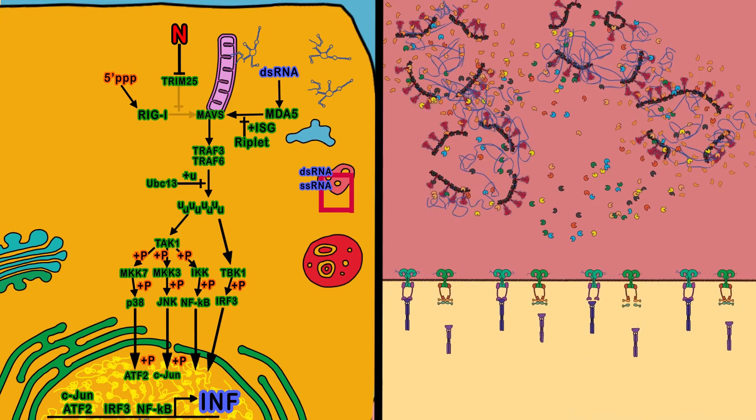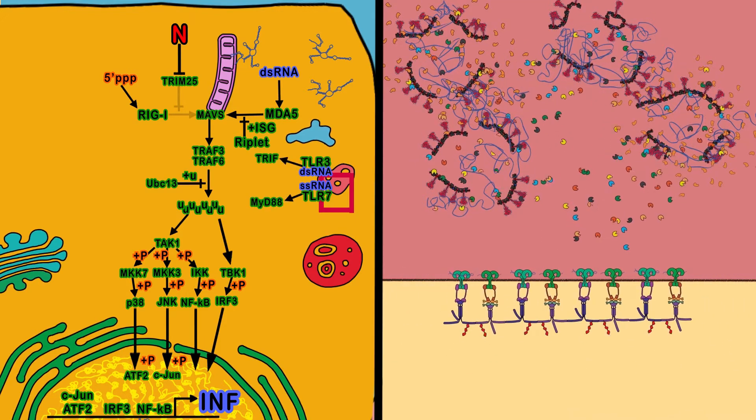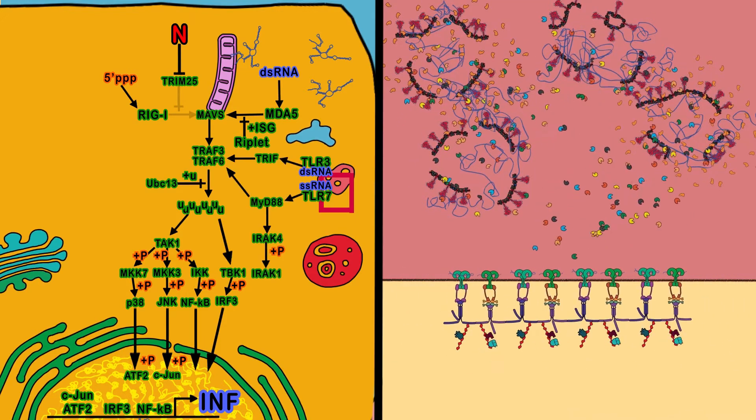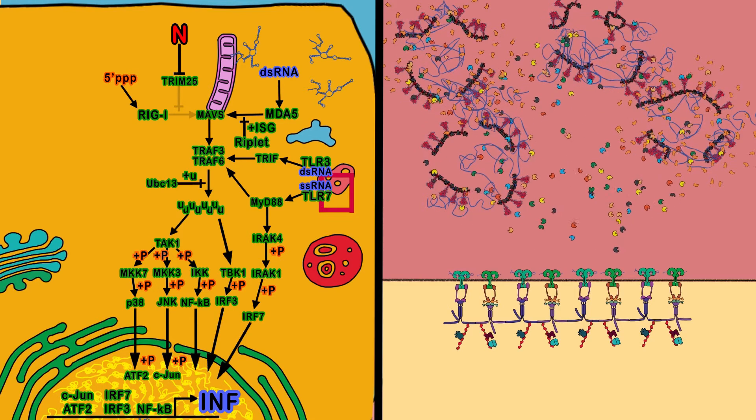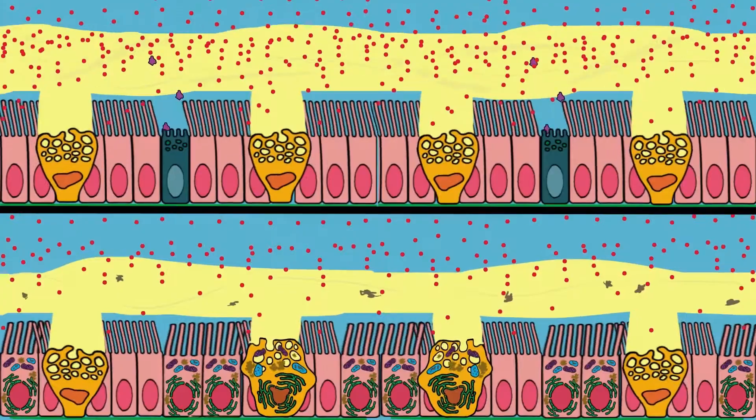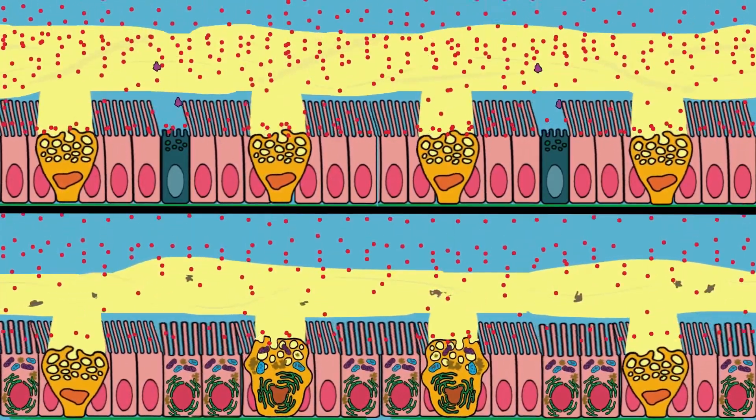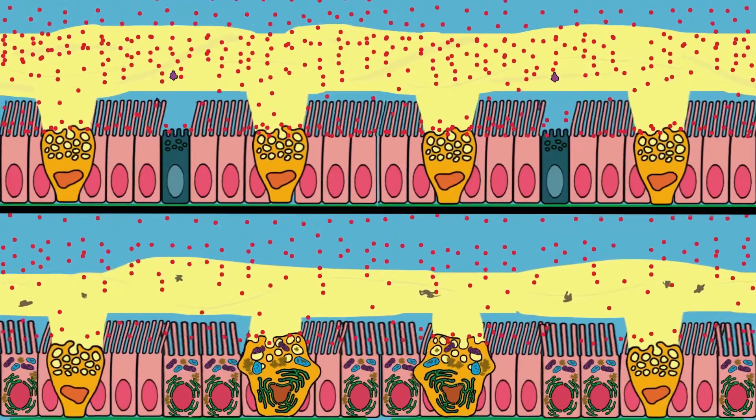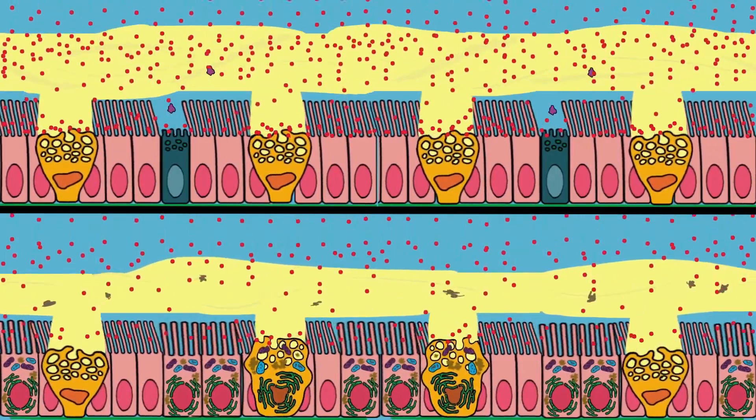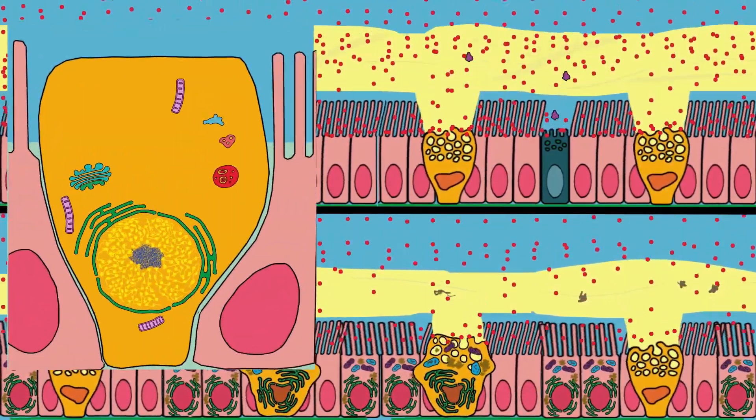Pieces of viral genome in the endosome activate toll-like receptors 3 and 7 to activate the other two signaling pathways that activate the interferon gene. The cells continue to withstand the continuous viral attack, but in some of the passengers the viral load is very high and in other passengers the cells are weak, sick, or old.